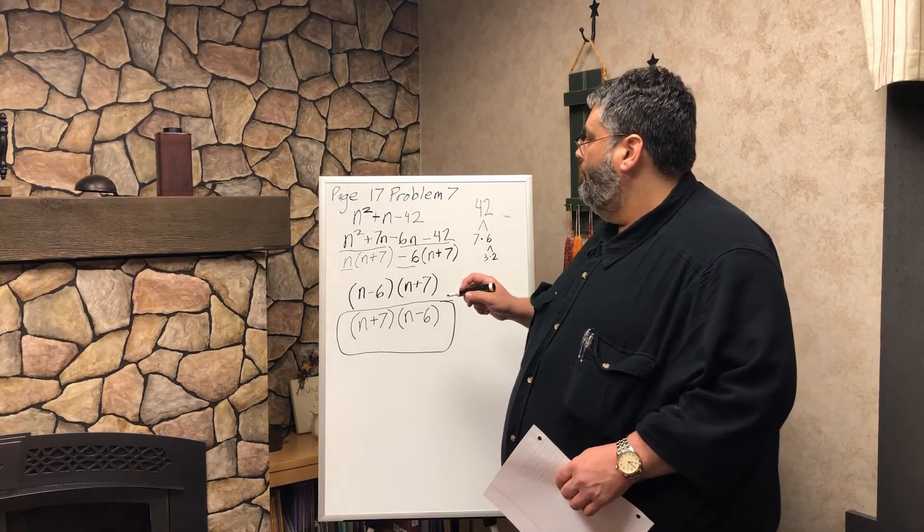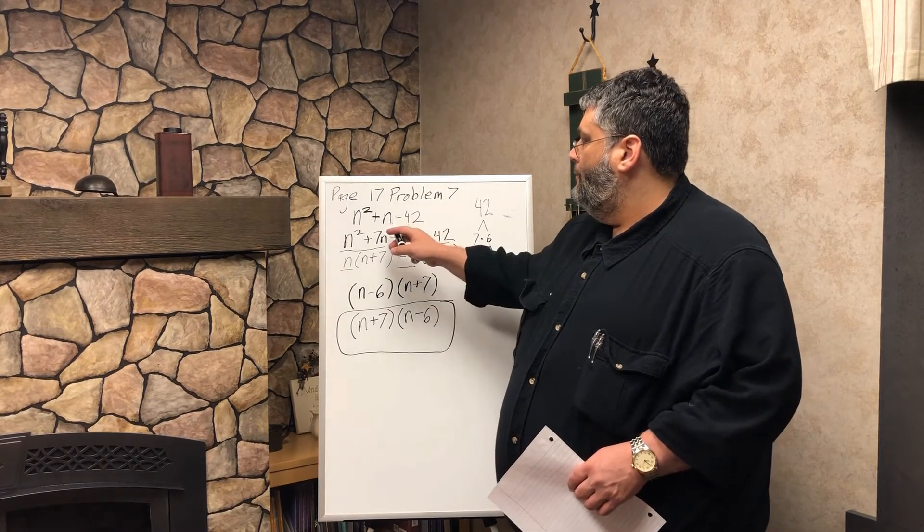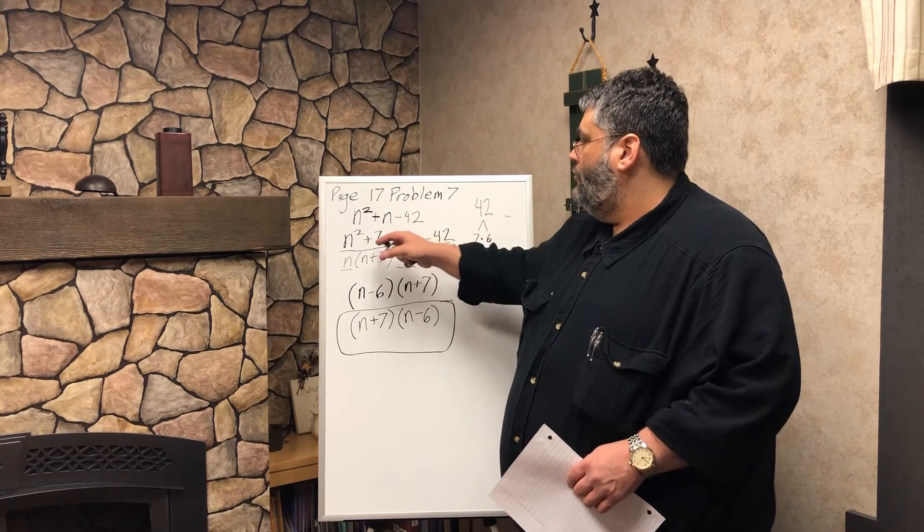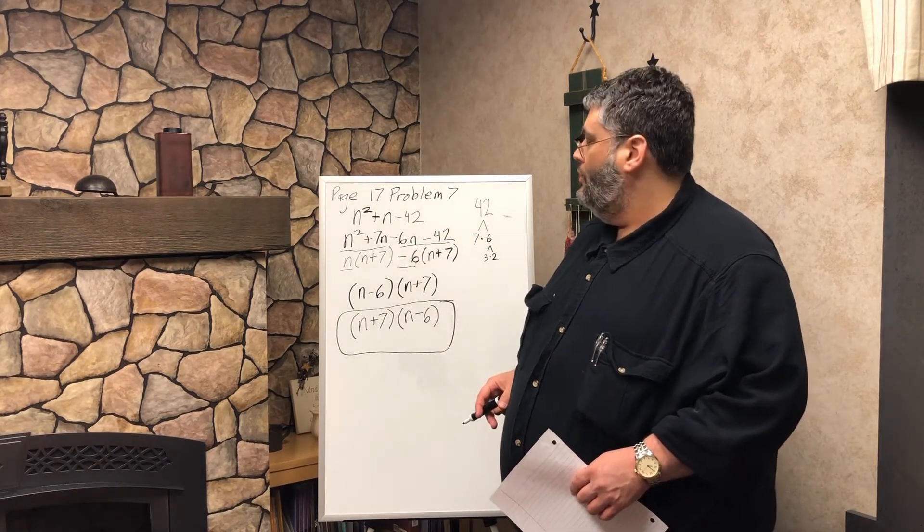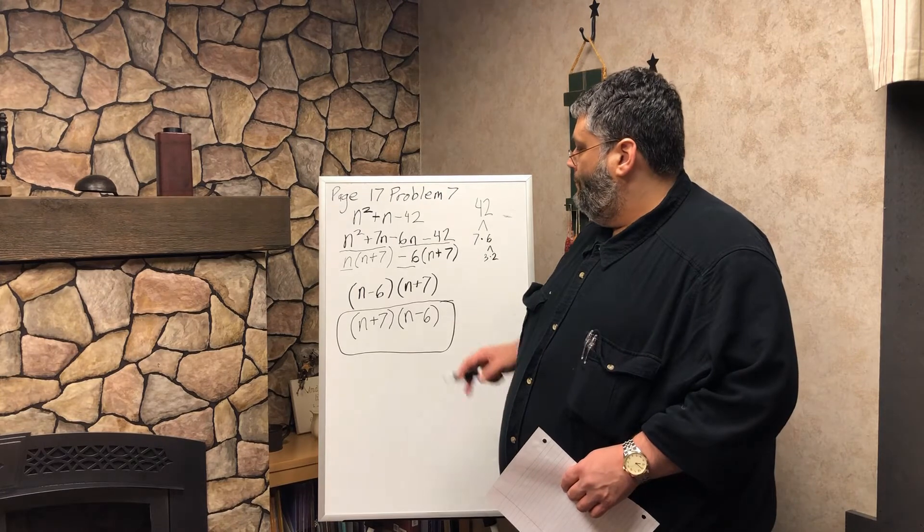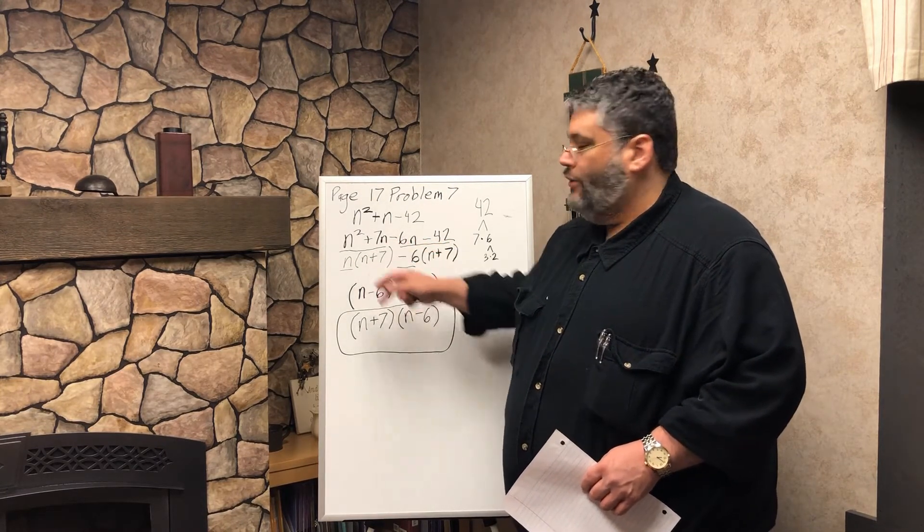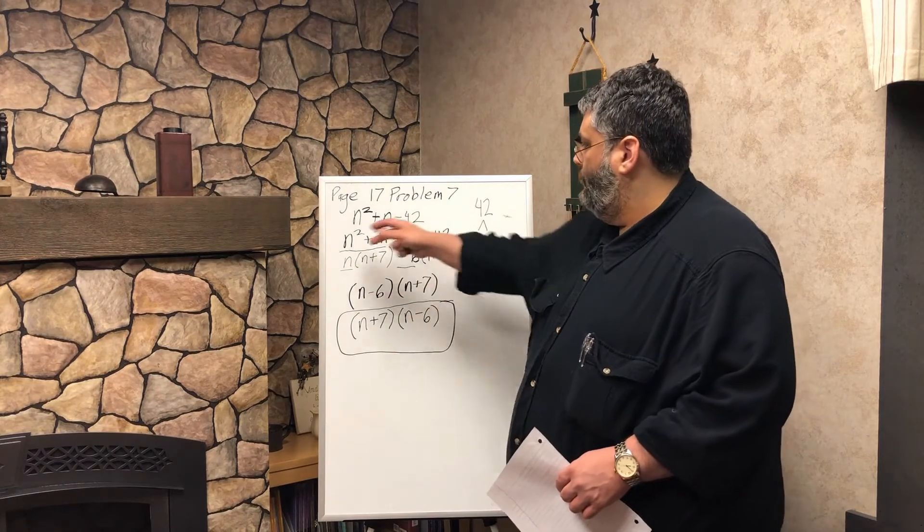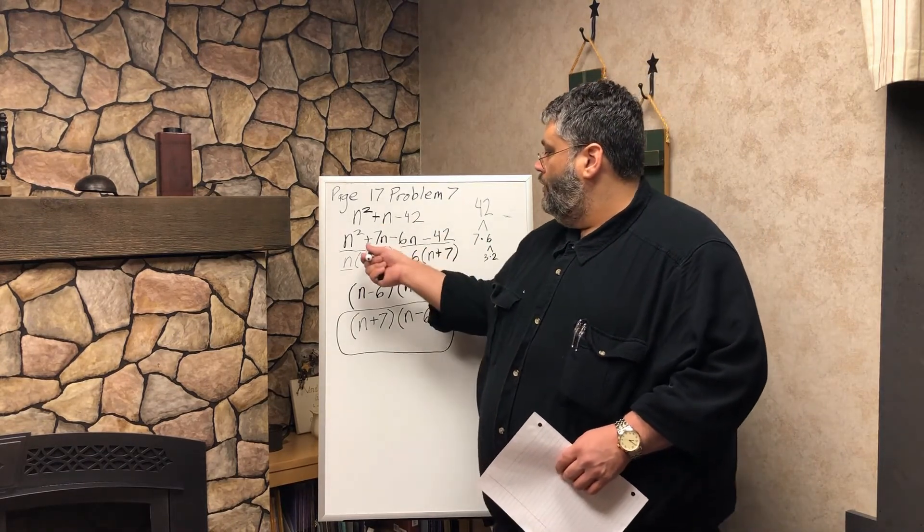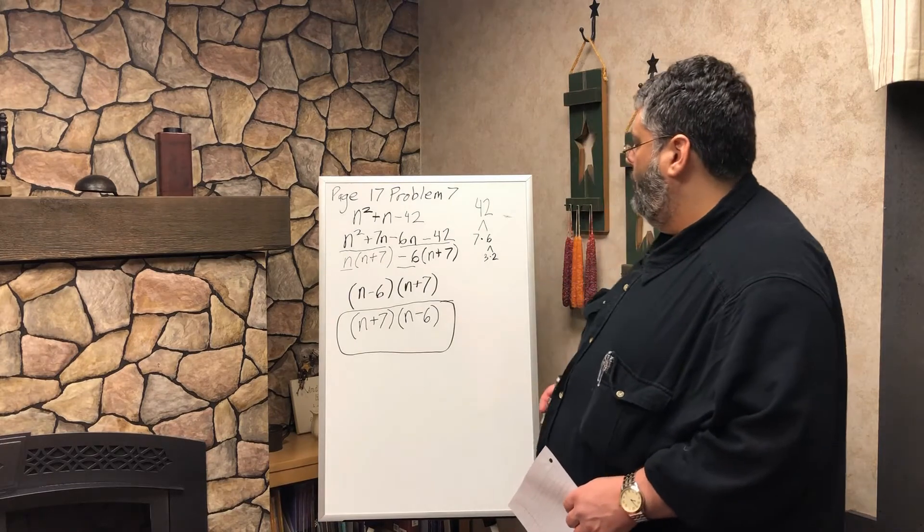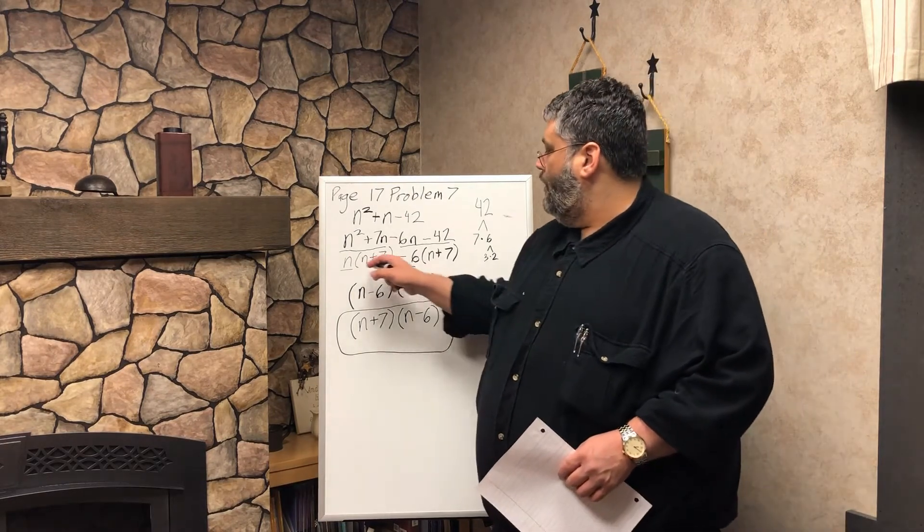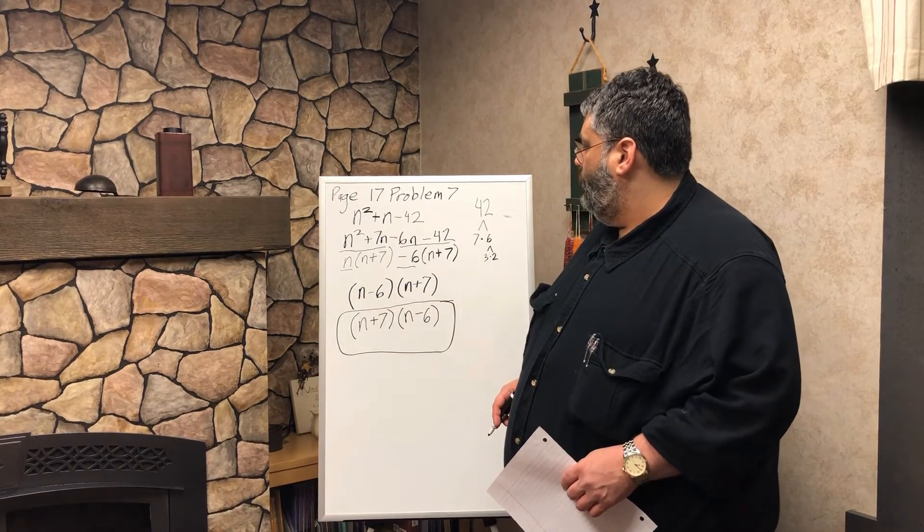And it helps us a lot because we're able to see how these factors may help us in basically getting a common factor out of this big expression, which is n plus 7. And when we get that common factor out there, then we're able to combine the terms.